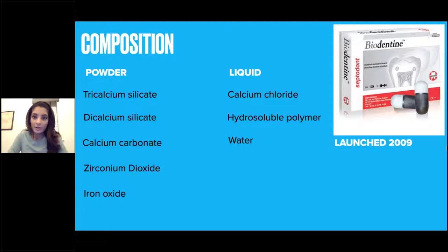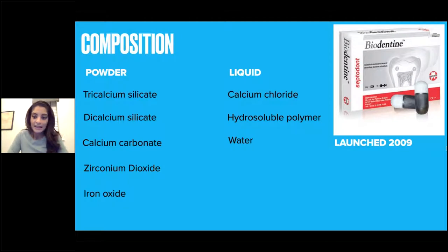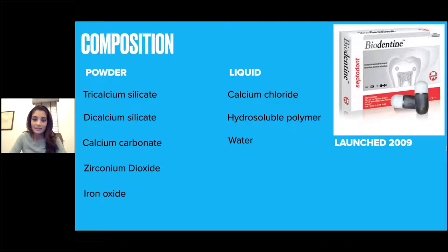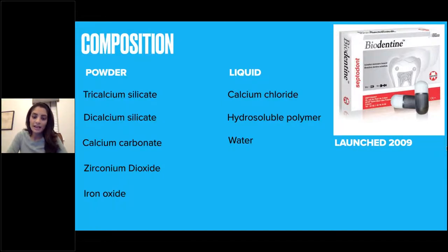The composition of Biodentine is based on a powder and a liquid. The powder contains tricalcium silicate as its main component, dicalcium silicate as its second component, calcium carbonate as a filler, zirconium dioxide which makes the material radiopaque, and iron oxide which is responsible for the shade. The liquid contains calcium chloride as an accelerator — meaning the material sets much faster than other calcium silicate cements — plus a hydrosoluble polymer which acts as a water-reducing agent for consistency, and water.